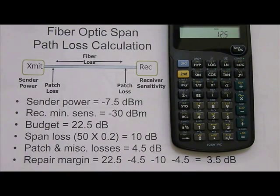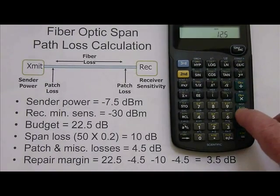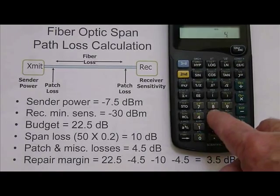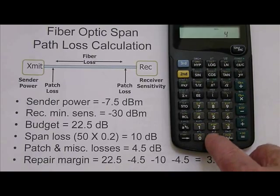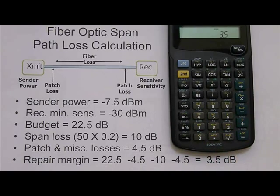We know that at each end we have patching and miscellaneous losses of 4.5 dB, and so we'll subtract 4.5 from one end and then 4.5 from the other end, leaving us with 3.5 dB as our repair margin.